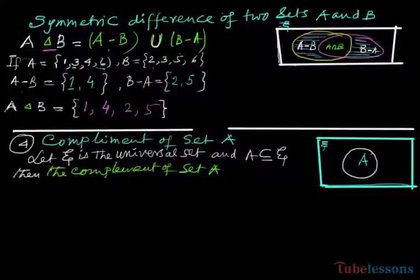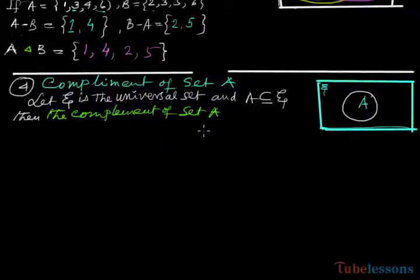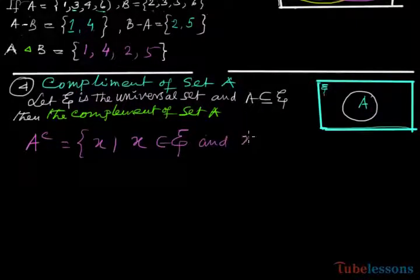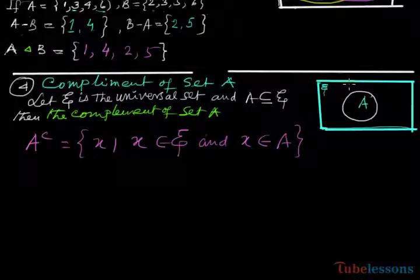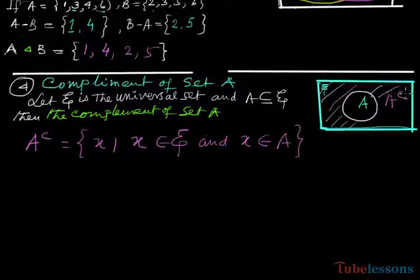Our next operation is complement of set A. Let xi be the universal set and A be a subset of the universal set. The complement of set A is defined as all x that belong to the universal set but do not belong to A. This region outside A in the Venn diagram is A complement.